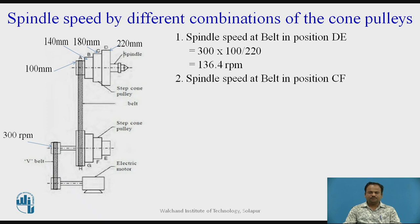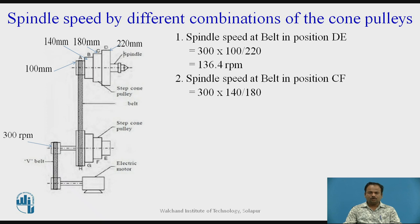Next is the second speed — spindle speed at belt in position CF. The input diameter is 140 mm and output diameter is 180 mm. Therefore the input speed is 300 rpm × 140 / 180, which gives us 233.3 rpm. This is the second speed.